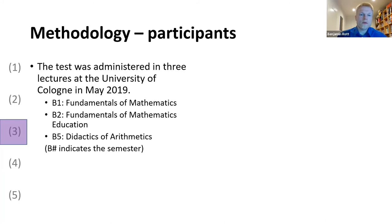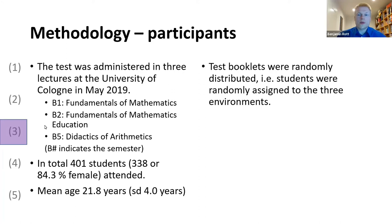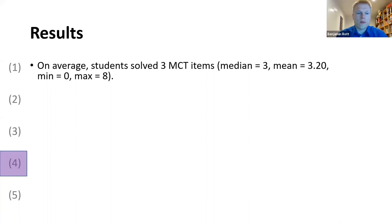The test was administered in three lectures at the University of Cologne, in group one, in students in their first, second, and fifth bachelor semester. In total, 401 students attended, and the test booklets were randomly distributed to these students. Participating was voluntary and took less than 20 minutes.